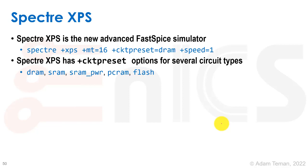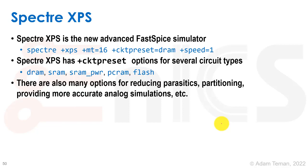There are different circuit presets used by XPS. The +CKT_preset can have parameters such as DRAM, SRAM, SRAM_power, PCRAM, and flash, which are optimized for simulating those types of technologies. There are also many options for reducing parasitics, partitioning, and providing more accurate analog simulations inside XPS, because those are the systems that Fast SPICE algorithms use to get improved speedup.